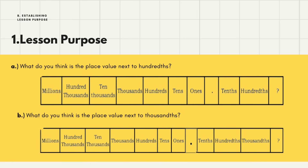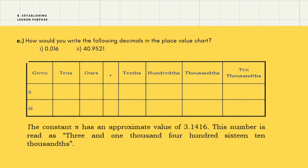In our place value chart, from left to right we have: millions, hundred-thousands, ten-thousands, thousands, hundreds, tens, ones — then the decimal point — followed by tenths, hundredths, thousandths, ten-thousandths, and so on. So the place value next to thousandths is ten-thousandths, then hundred-thousandths, then millions, ten-millions, hundred-millions, and billions.